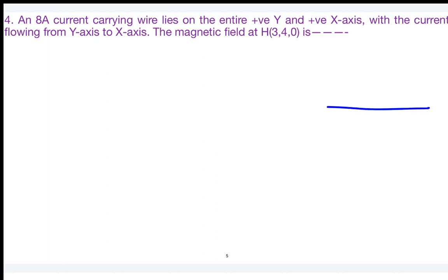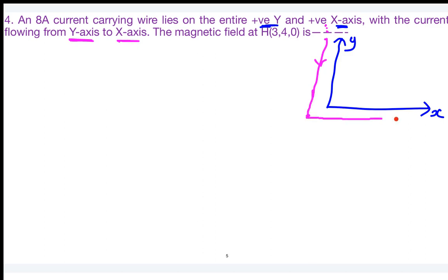The current flows along the positive y-axis and then along the positive x-axis — not on the negative y or negative x. So the current starts from infinity on the positive y-axis, reaches the origin, diverts onto the x-axis, and flows to infinity. The observer is located at (3, 4, 0).